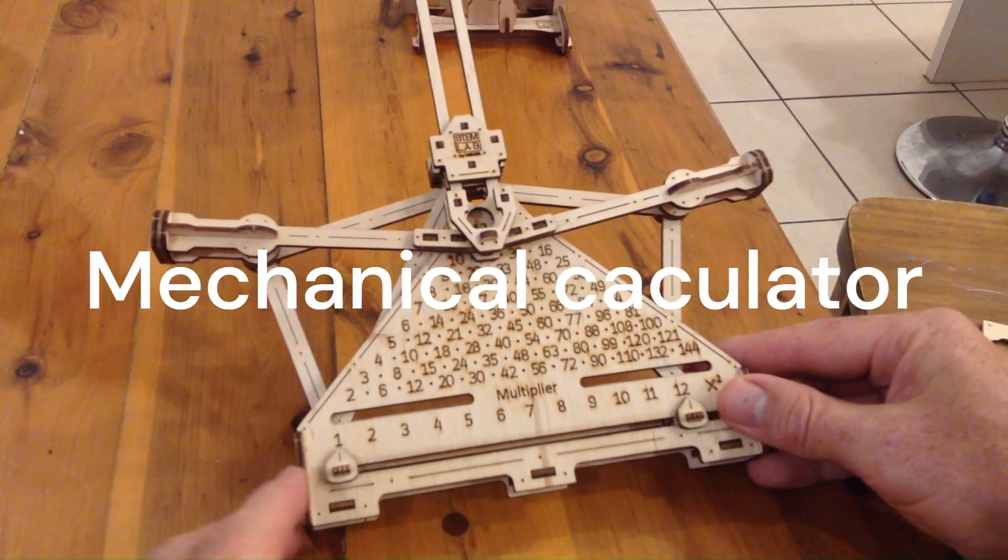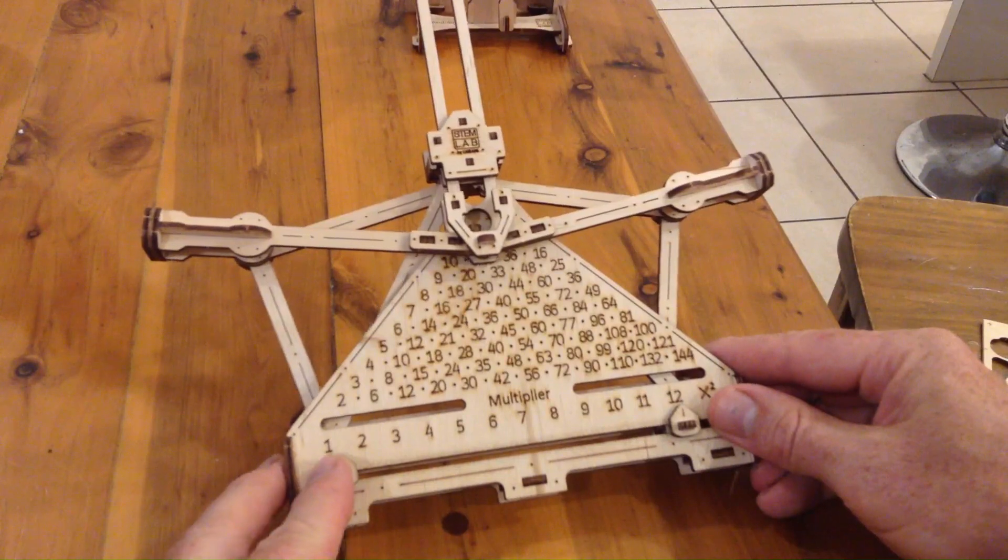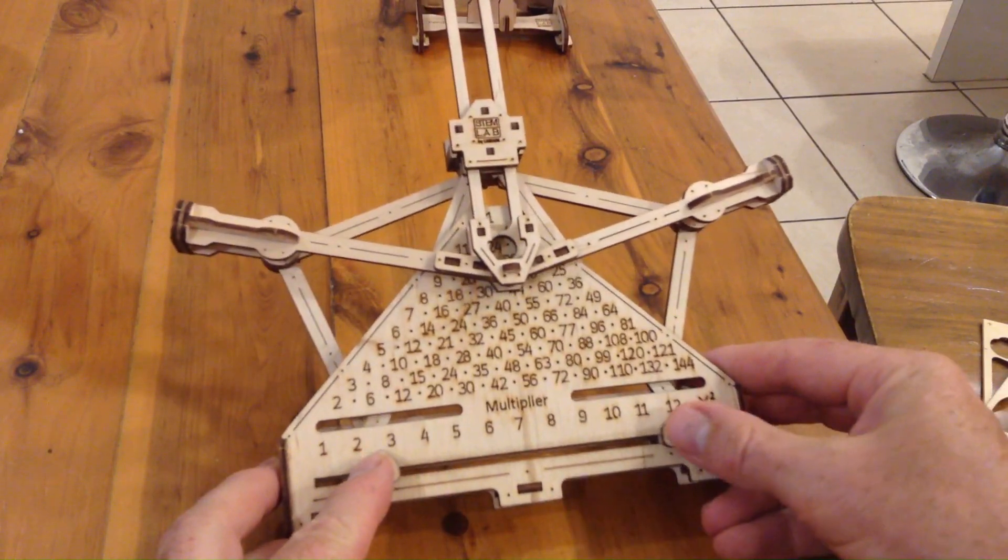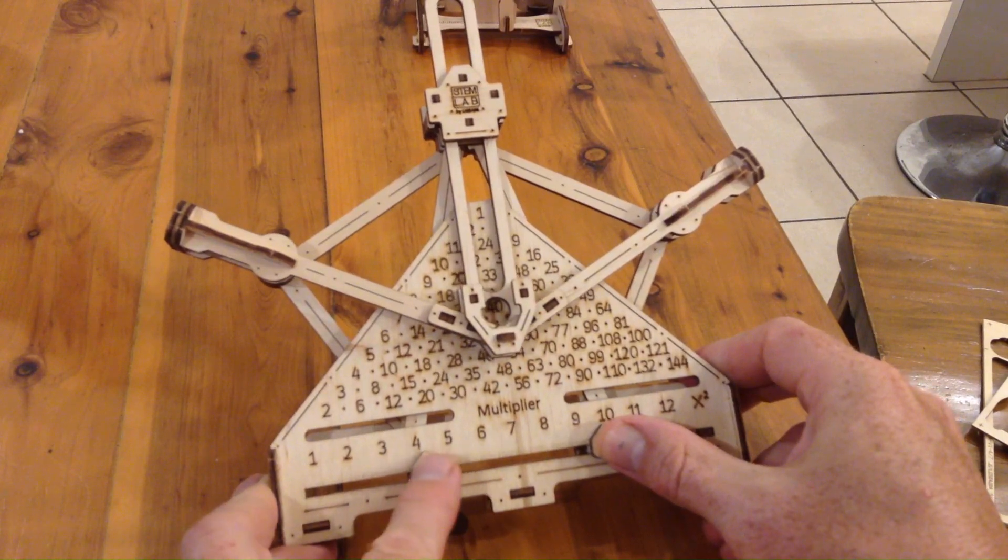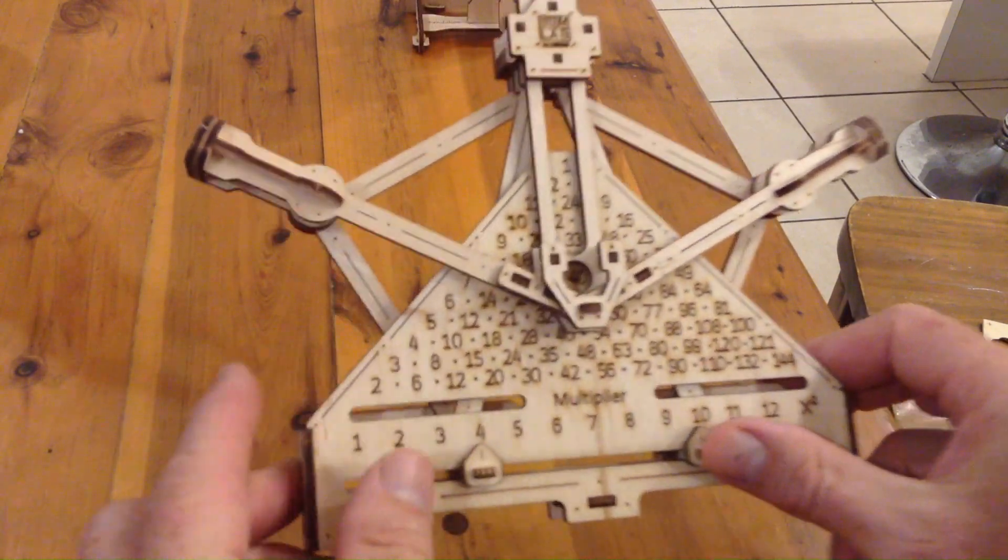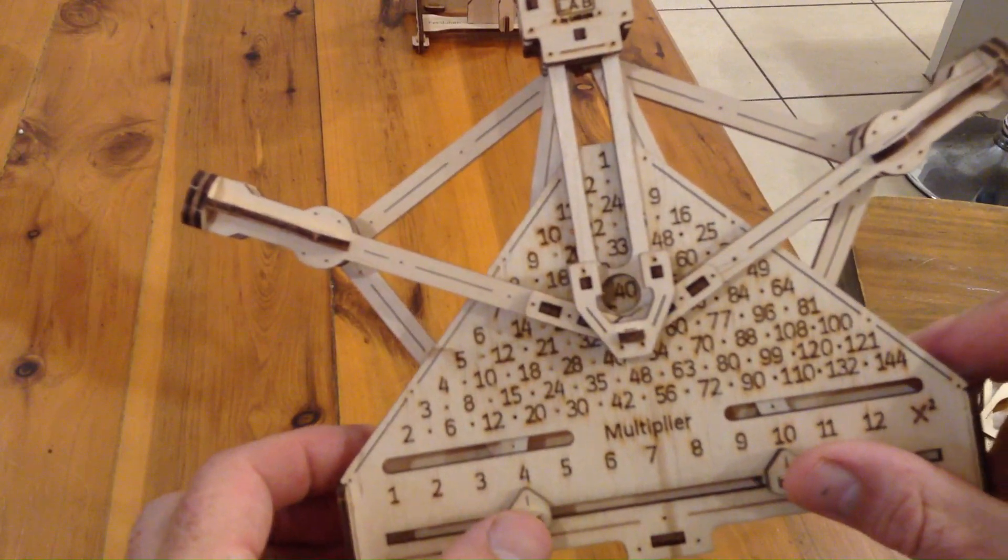This one here is a bit like a mechanical calculator. If you move the numbers down and up around here, it multiplies the two numbers together. So four times ten, you see in there, gives you the answer.